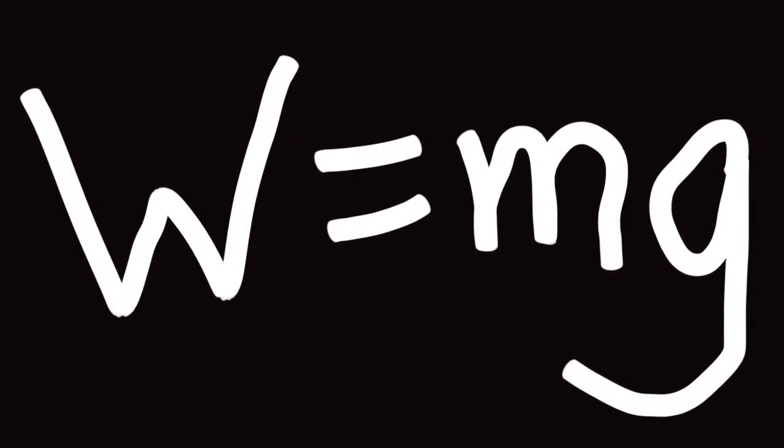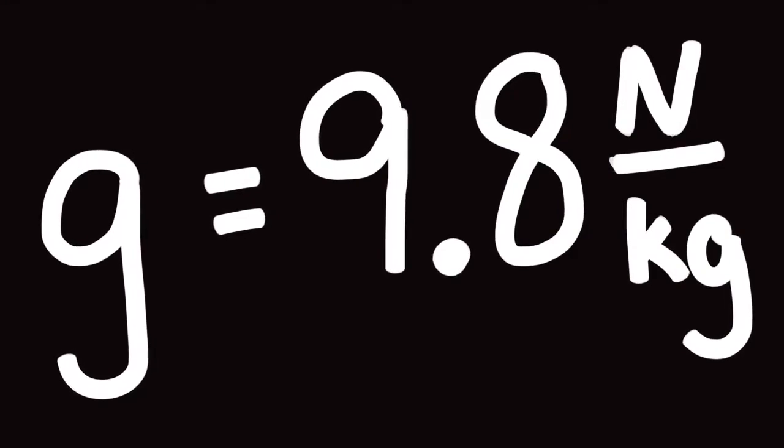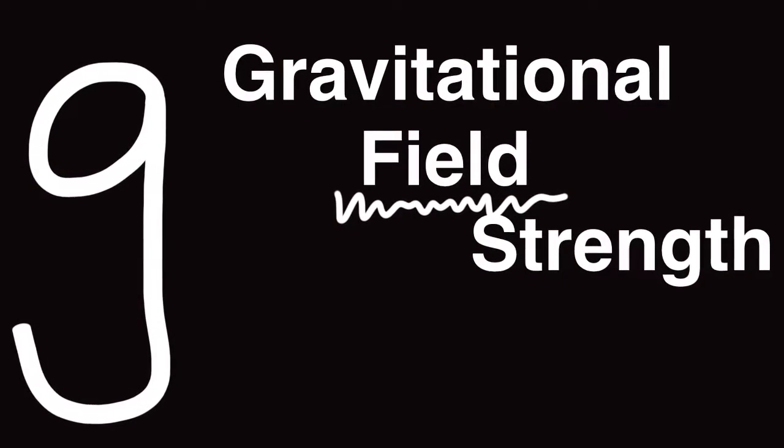In this case, g is just a proportionality constant between the weight and the mass, and it is 9.8 newtons per kilogram. We call g the gravitational field strength.